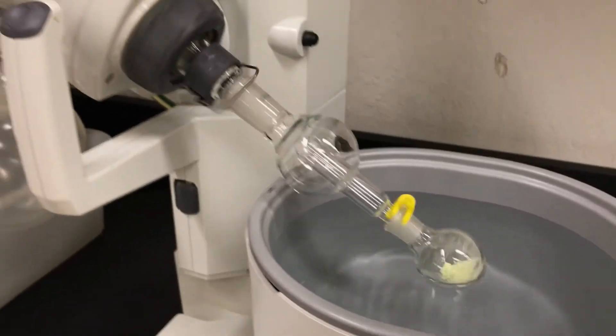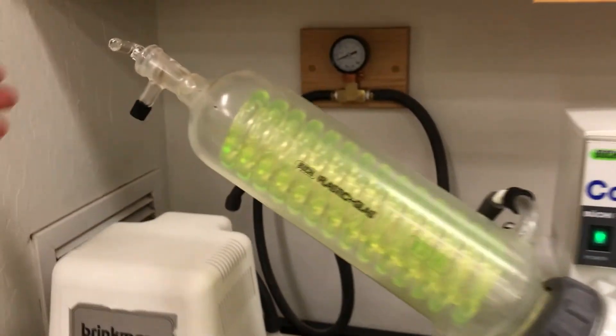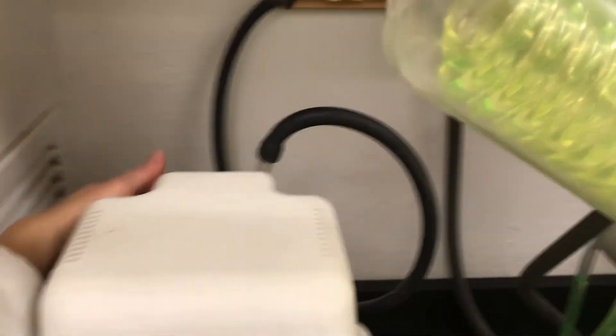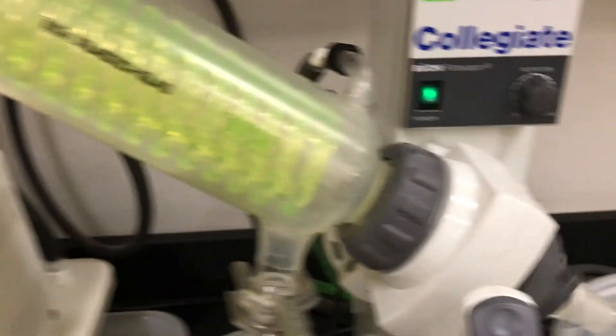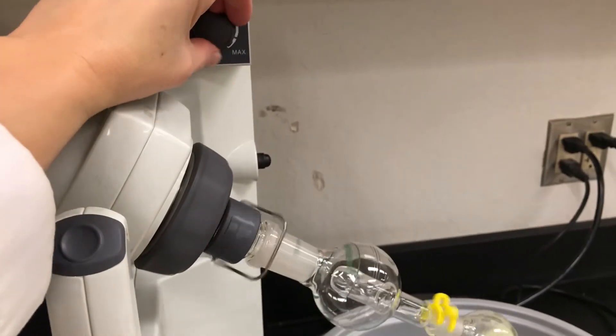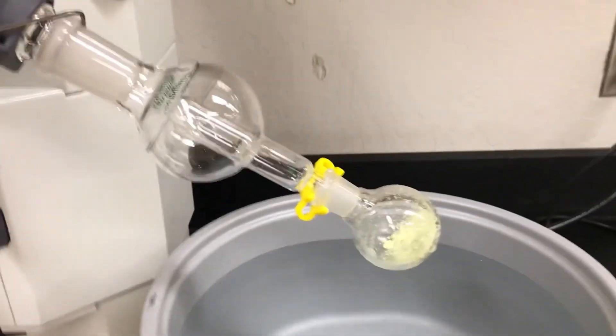When the solvent is removed and you're done you're then going to just do all the steps in reverse. First turn the stopcock to open it up to the atmosphere, turn off the vacuum, raise the flask out of the water bath, and stop the rotation. And at that point you can take the flask off.